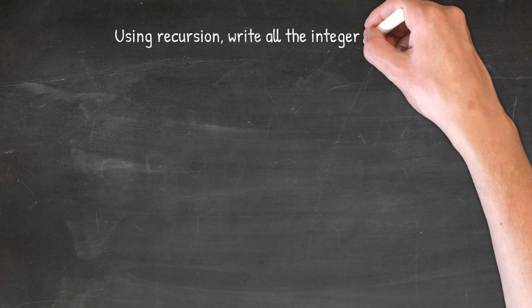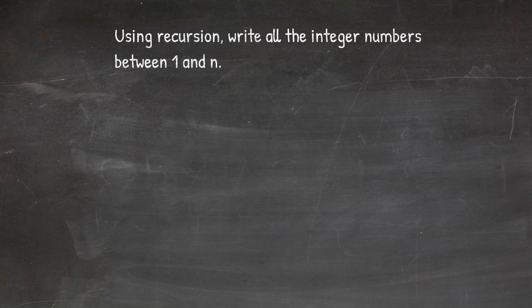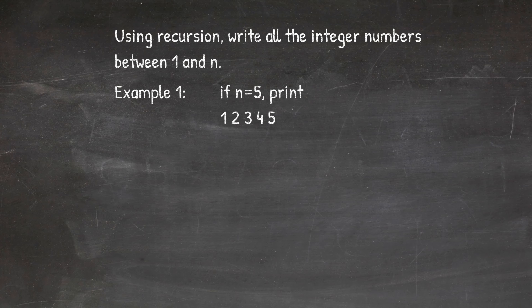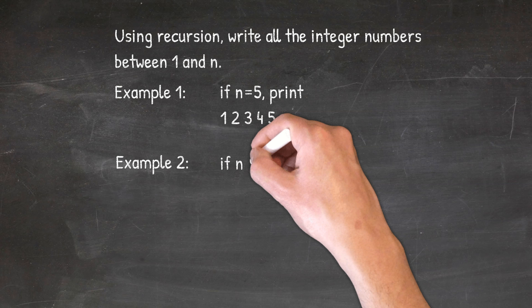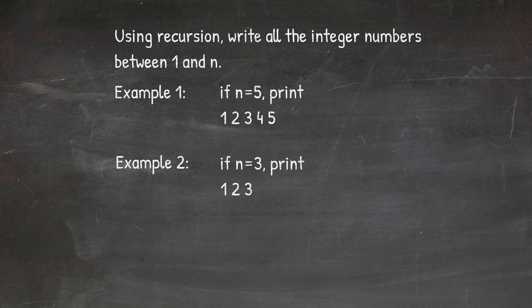As a quick bonus teaser program, let us discuss the solution of another problem relevant to the one we have discussed today. Using recursion, write all the integer numbers between 1 and n. That is, if n is equal to 5, we have to print 1, 2, 3, 4, 5. If n equals 3, then we have to print 1, 2, 3. Notice that in the previous program, we wrote all the numbers in reverse order. When n was 5, we printed 5, 4, 3, 2, 1. Now we are saying print 1, 2, 3, 4, 5.